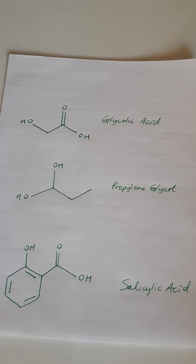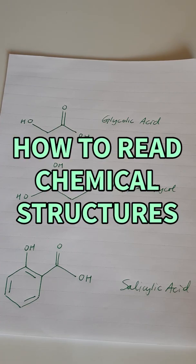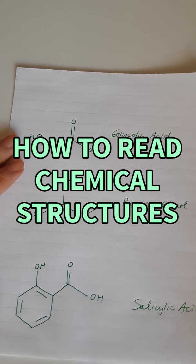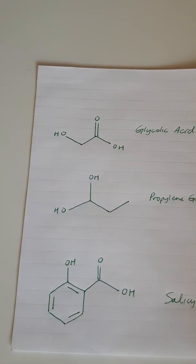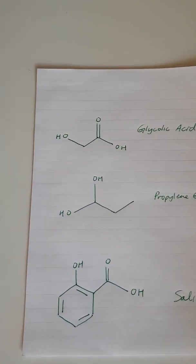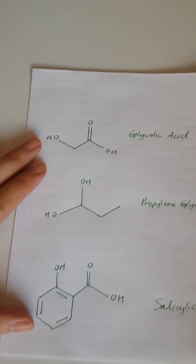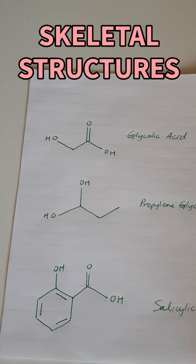Today I thought I'd do a little thing about how to read chemical structures. Here are some chemical structures and you might have wondered what they meant. These are called skeletal structures, and there are a few rules for them.